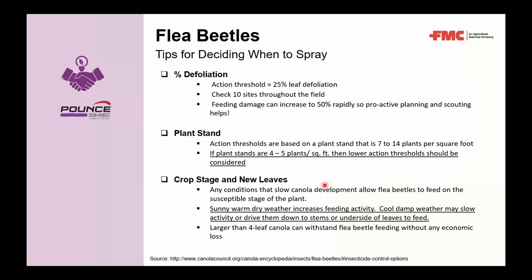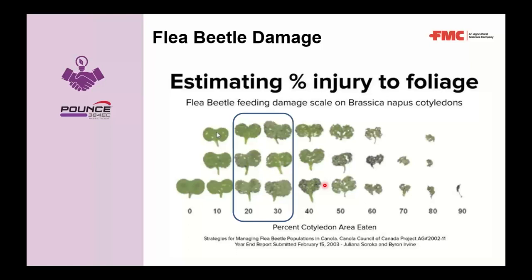This slide shows how to estimate the percentage injury to canola foliage from flea beetle feeding. The damage scale illustrates what 20%, 30%, 40%, 50%, and 60% defoliation looks like visually on canola leaves.